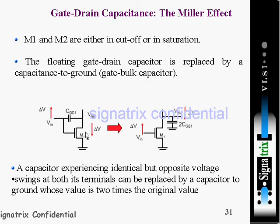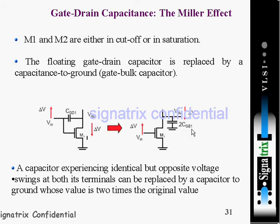M1 and M2 are working either in cutoff region or in saturation region. The floating gate-to-drain capacitor is replaced by capacitors to ground — that is the gate-to-bulk capacitance. So CGD1 is replaced by a capacitance to ground, specifically two times CGD1.